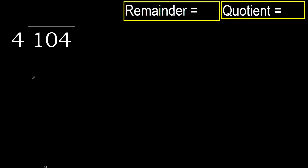104 divided by 4. 1 is less, therefore next. 10 is not less, therefore with 10: 4 multiplied by which number is nearest to 10 but not greater.